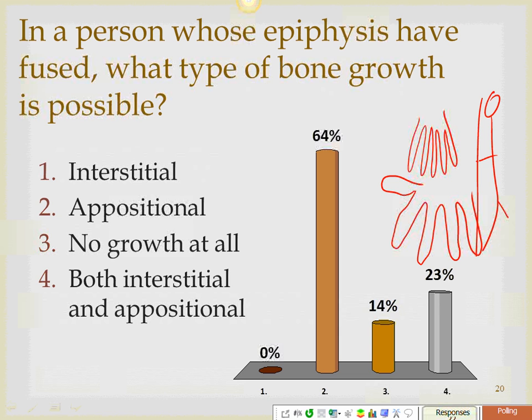Dwarfism is the opposite of gigantism — it is when growth hormone production is much less than normal, so these people do not grow very tall. It is called pituitary dwarfism.